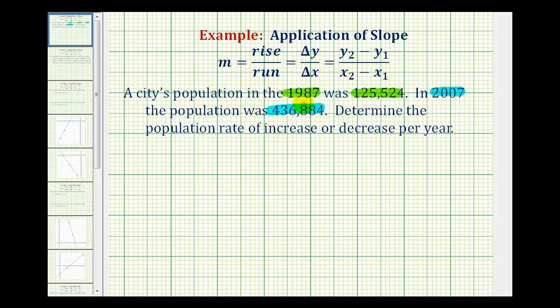So for the coordinates of the first point, we'll use the information from 1987. The first point would have an x-coordinate of 1,987, and the y-coordinate would be the population for that year.